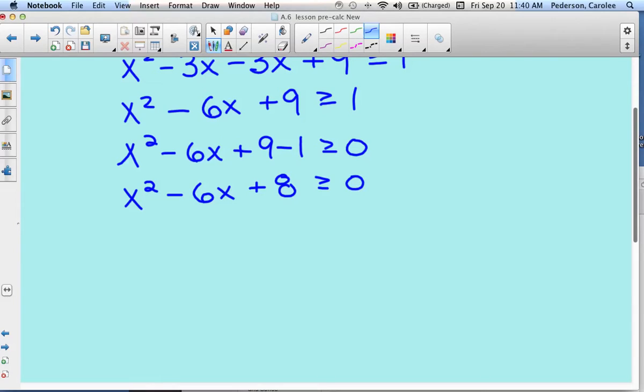Now we think about the methods of factoring this quadratic equation. The leading coefficient is 1, so we're going to use a chart method. We've been starting to do these in our head. What are the factors of 8 that add to negative 6? That is negative 4 and negative 2.